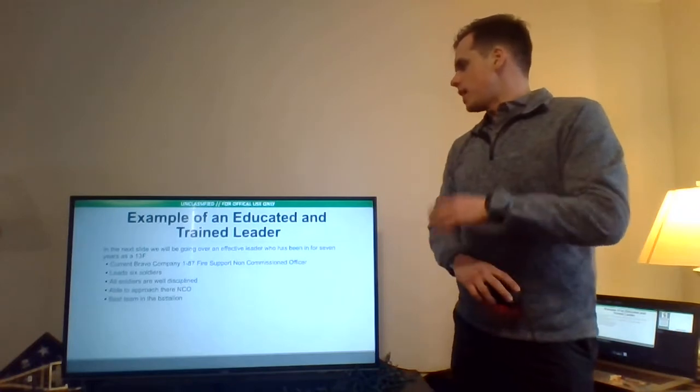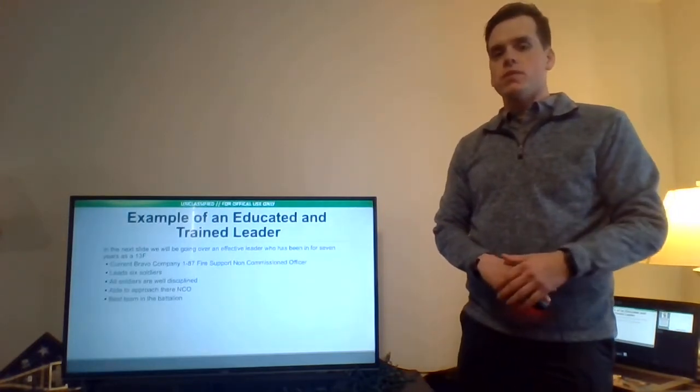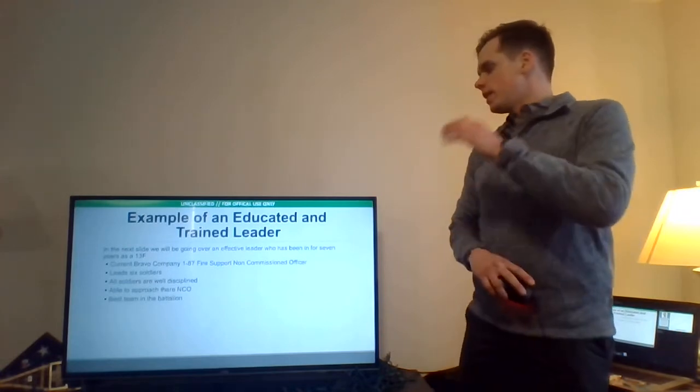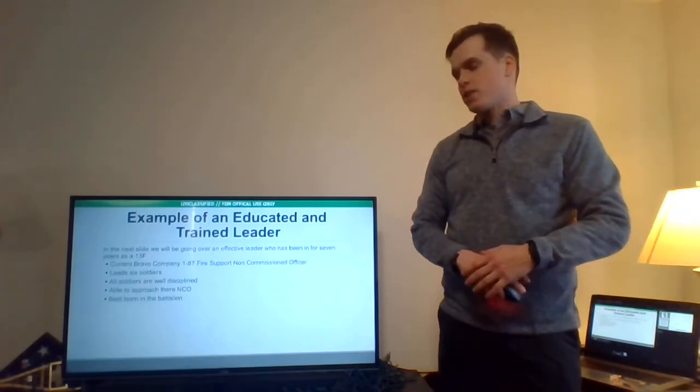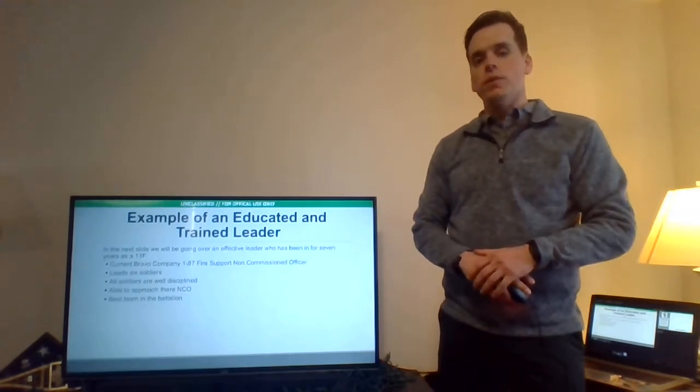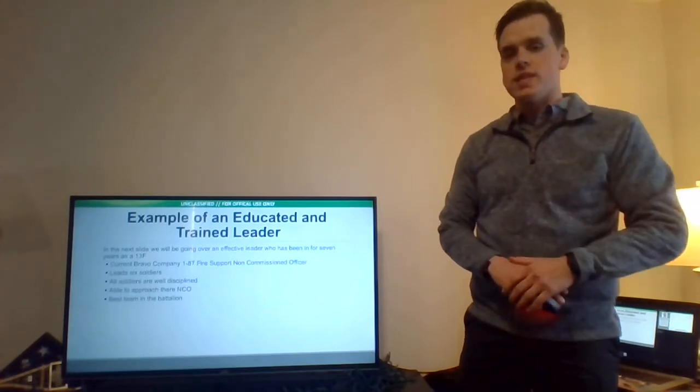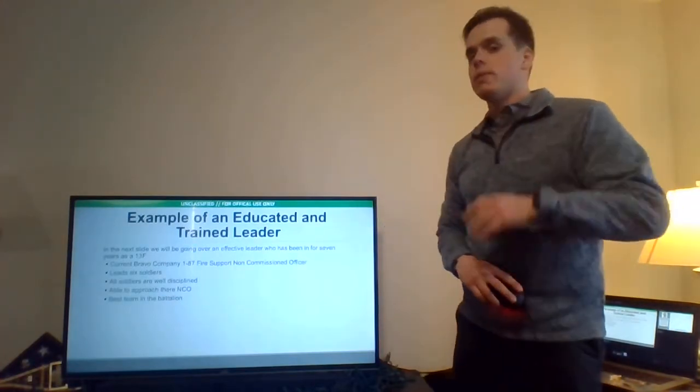An example. So we have an educated and trained leader. He's a Staff Sergeant. He's been in the Army for seven years. Staff Sergeant John A. Doe. He is currently the Bravo Company 187 Fire Support Non-Commissioned Officer. That's an E6 slot. He has six soldiers. All soldiers are well disciplined. He is an approachable NCO and they are considered the best team in the battalion.